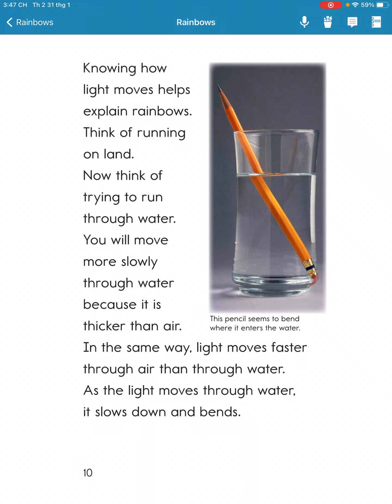Things move faster on land than when trying to move through water. In the same way, light moves faster through air than through water. As light moves through water, it slows down and bends.